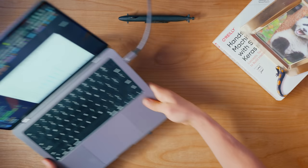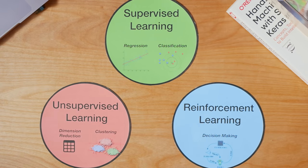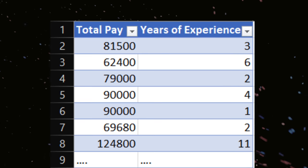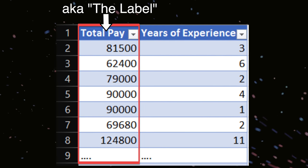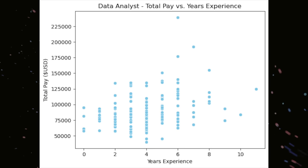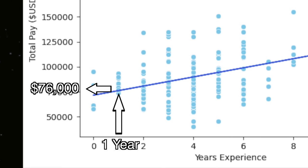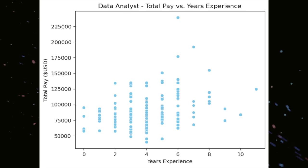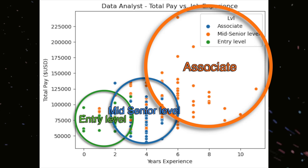It's not as simple as saying you're going to implement machine learning — you have to select what type of model to build. First is supervised learning, where you have a labeled data set. For example, with a data set of total pay and years of experience for data analyst jobs, we could use regression to predict total pay based on years. Besides numerical prediction, we could also perform classification — such as identifying job level, like entry level or not, based on total pay and years of experience.